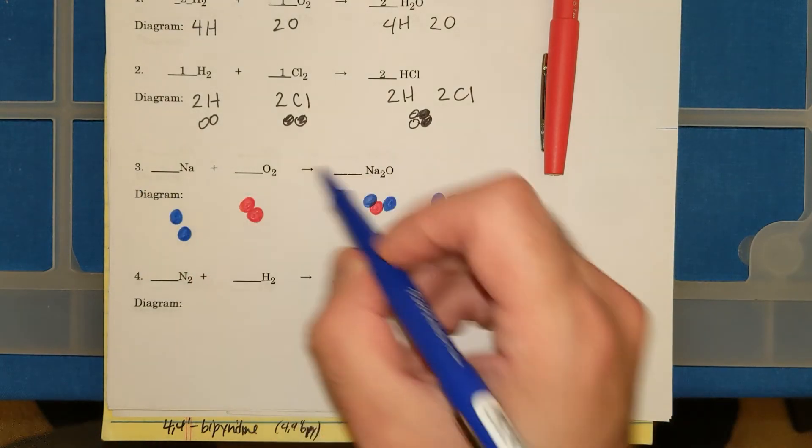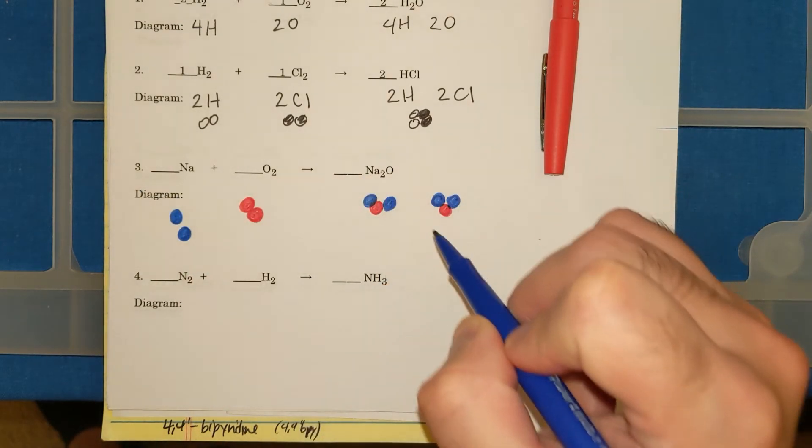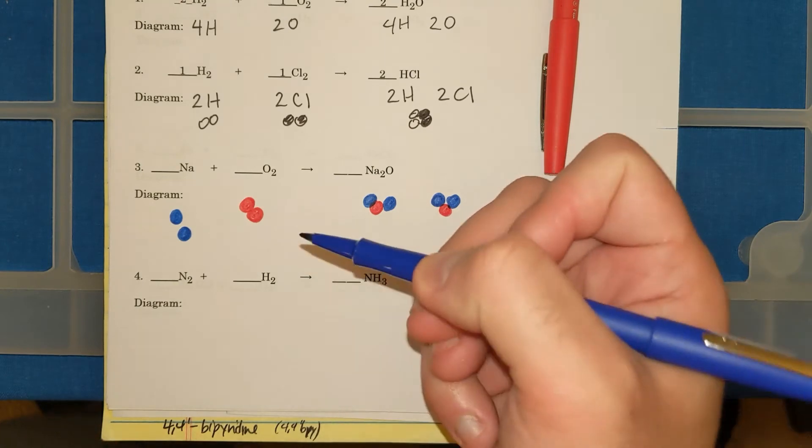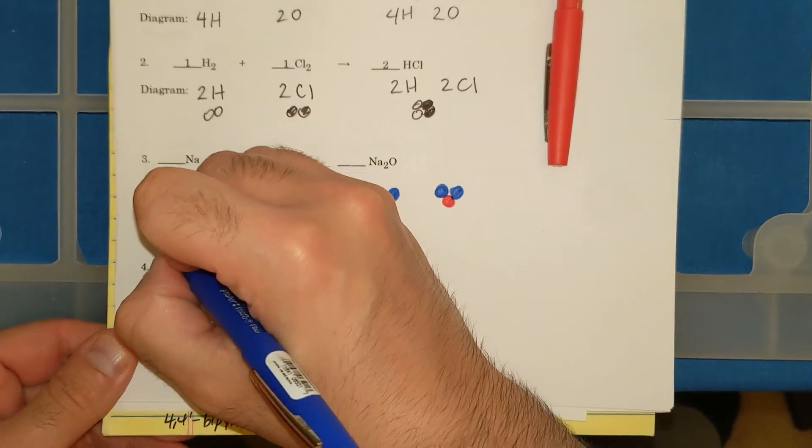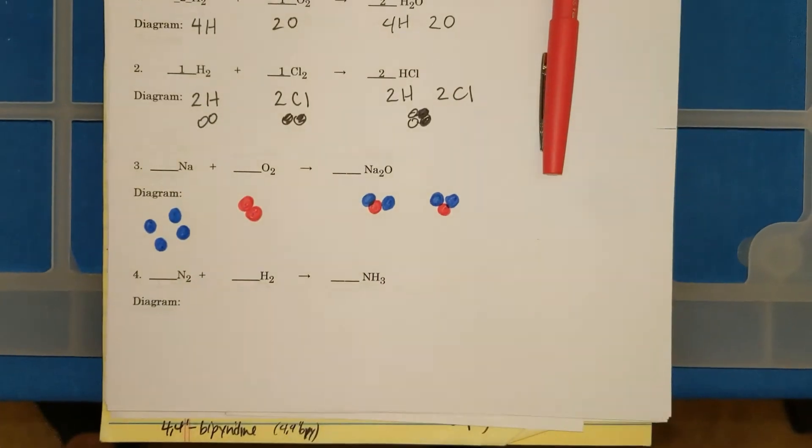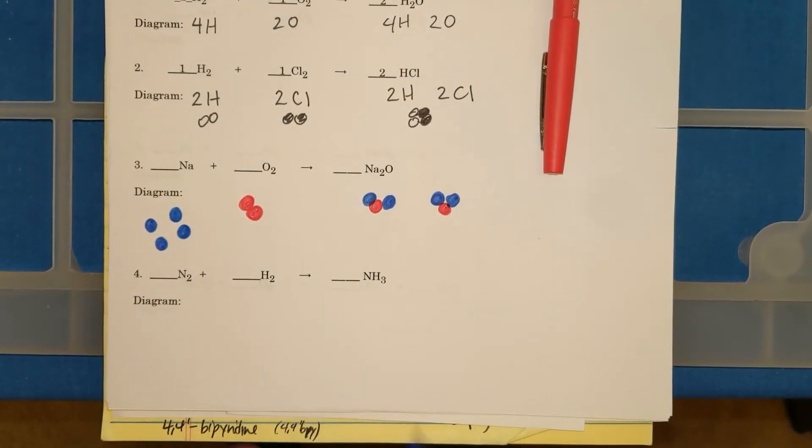I have 2 Na's over here. But now I have 1, 2, 3, 4 blue Na's on the right. How can I fix this? By adding 2 more Na's. And now I am balanced.